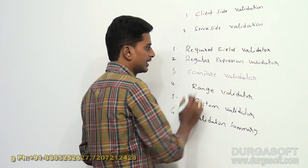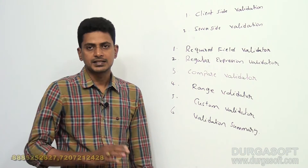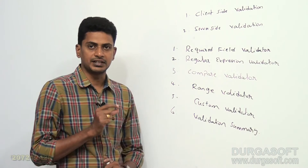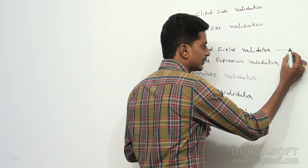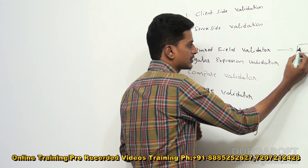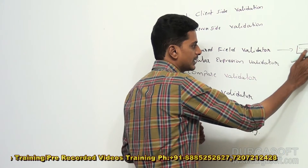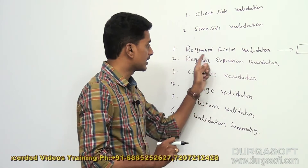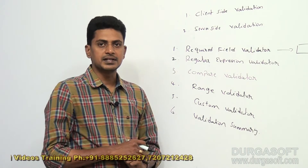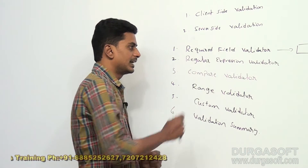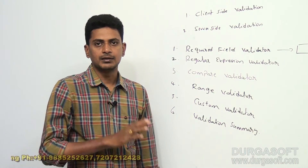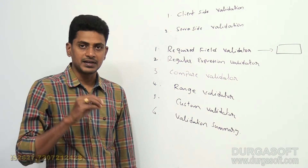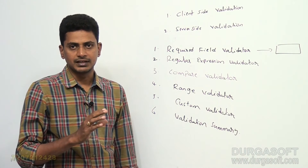Required Field Validator is used to check the emptiness of a control. For example, if we assign a Required Field Validator to a text box control, you must enter some data in that text box. If you do not enter any data, then the Required Field Validator will check whether data is present in the control or not. If it is not present, then it returns false, and your page will not be submitted to the server.